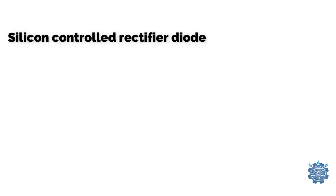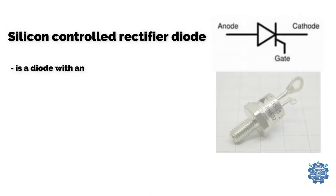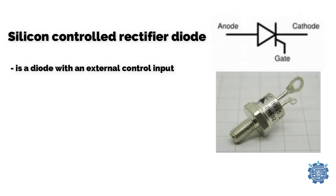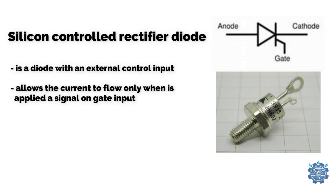Silicon Controlled Rectifier is a diode with an external control input named gate input, and it allows the current to flow in one direction and only when a signal is applied on the gate input.